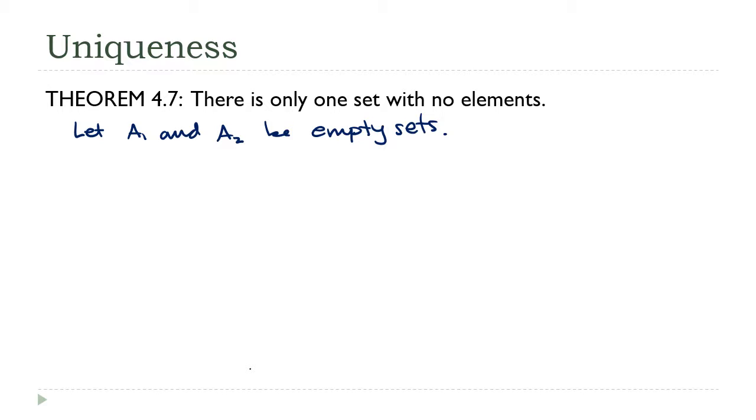Well we saw on the last slide that the empty set is a subset of every set. Therefore, A₁ must be a subset of A₂ because the empty set is a subset of every set.